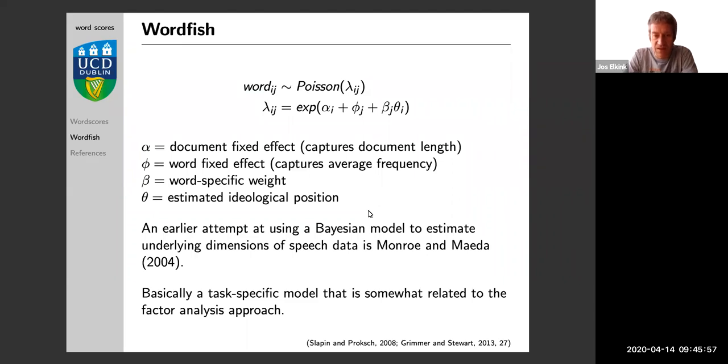So in the lab, keep an eye out for the beta and the theta. The beta is how much does the particular word—every word has a beta value—how much does this word help in distinguishing texts along the ideological dimension, and theta is just the actual ideological position of the document.